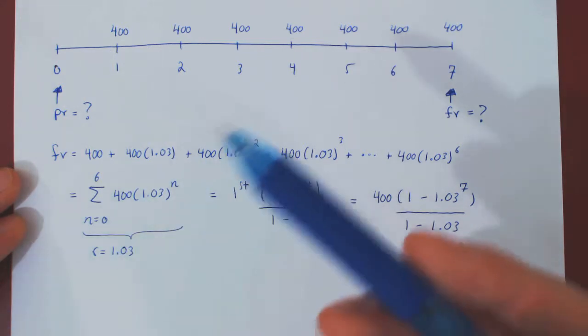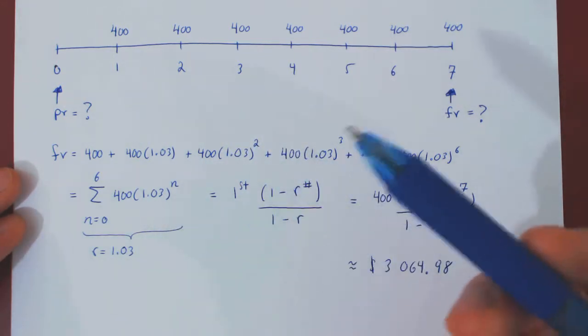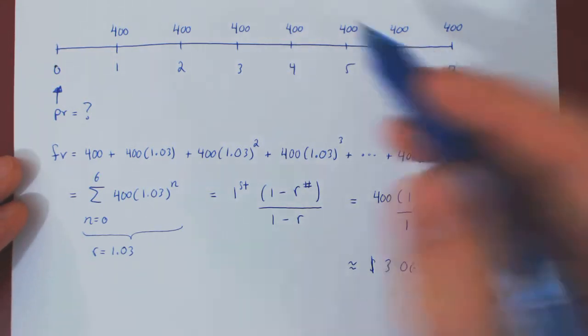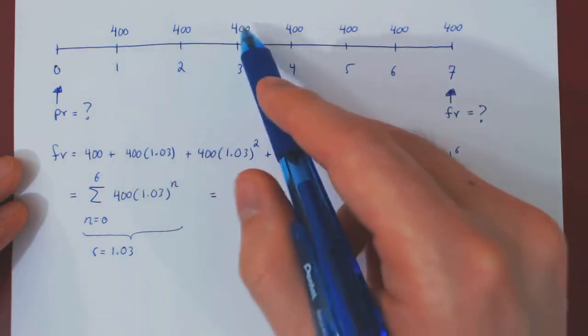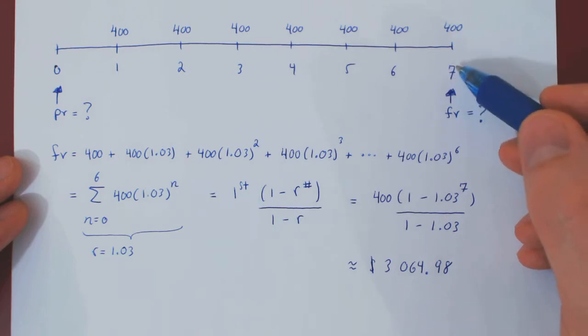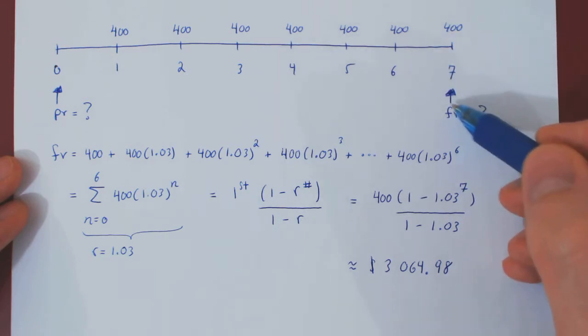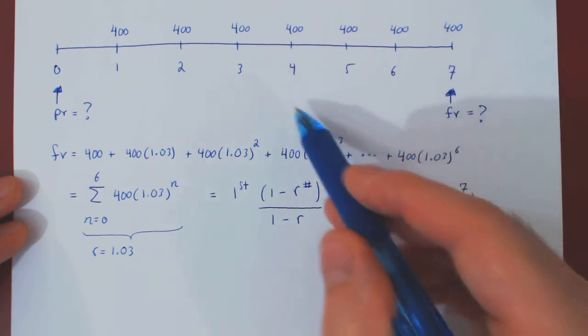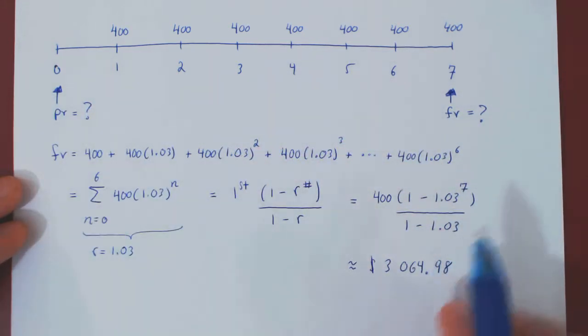Let's do the simpler way first, and then we'll look at a second way using, again, our knowledge of geometric series. Now that we know the value of those seven investments at time seven after seven years, therefore the final value, we simply have to bring this backward in time by seven years.